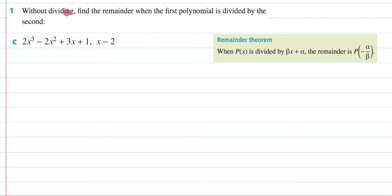So let's begin by reading the question. It says, without dividing, find the remainder when the first polynomial is divided by the second. And here are our two polynomials. Now our first one is being divided by our second one. Now the whole point of this is, as you can see here, not to use division.